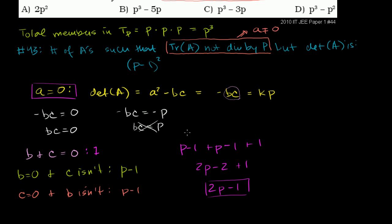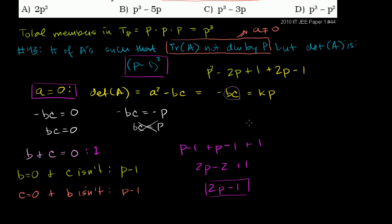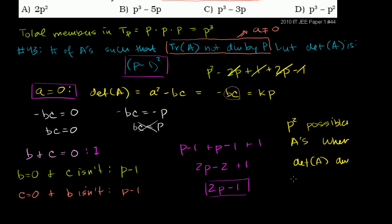So that's 2p minus 1 from this case, and from the last video we had (p minus 1) squared possibilities when a does not equal 0. Adding them together: (p minus 1) squared plus (2p minus 1) equals p squared minus 2p plus 1 plus 2p minus 1, which gives us p squared total A's where the determinant of A is divisible by p.